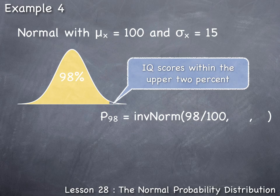The last two numbers entered in the inverse norm command are μ_x and σ_x, the mean and standard deviation. Here the mean is 100 and the standard deviation is 15.